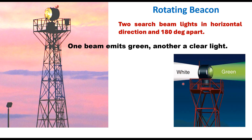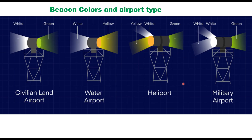The approach beacons can provide information on the type of airport through the color of their lights. White and green lights indicate a civilian airport on land, whereas one beacon emitting white light and another emitting yellow light indicates a water airport. Green, yellow, and white — if there are three lights in that combination — indicates a lighted heliport. And if there are three lights in the combination of white, white, and green, that is the indication of a military airport.